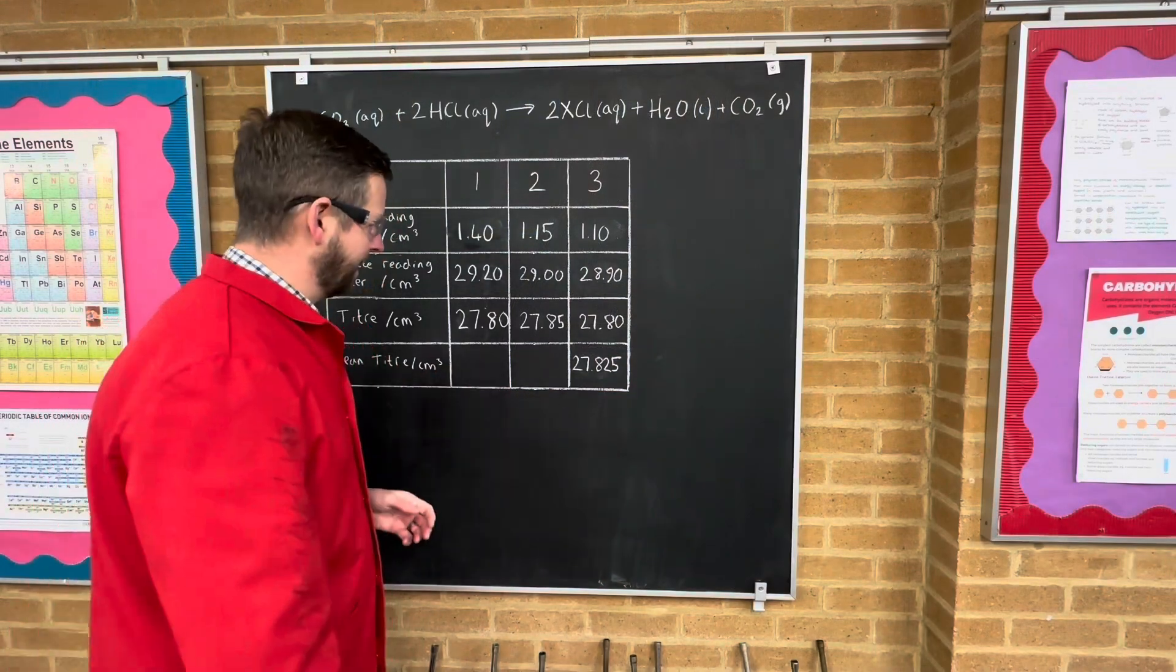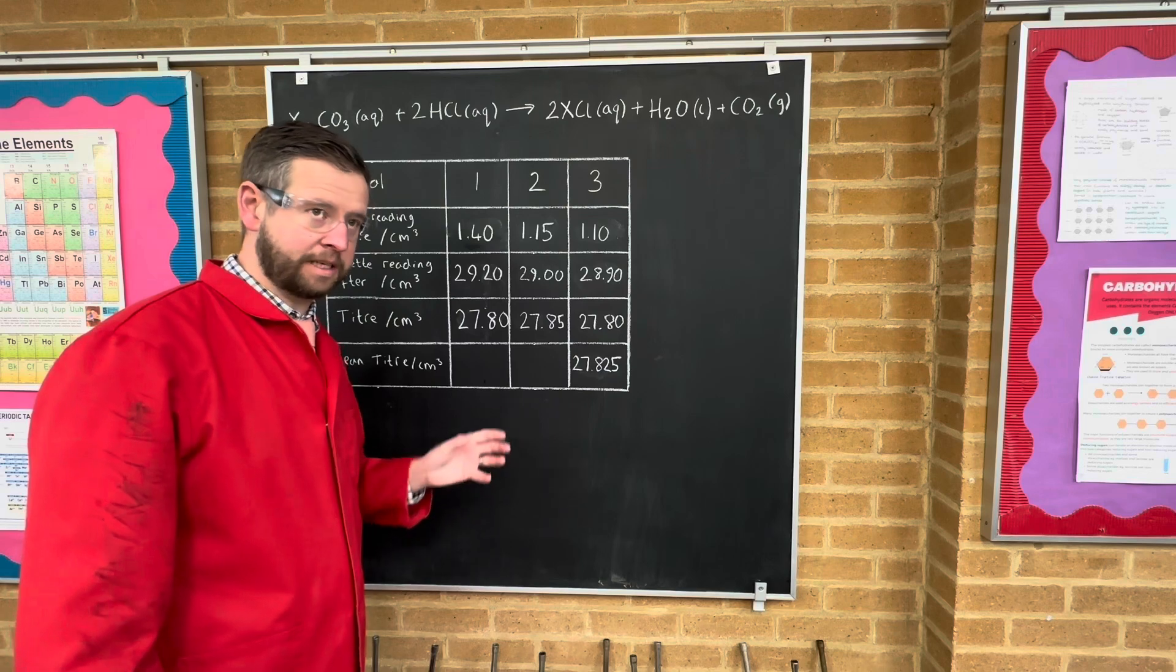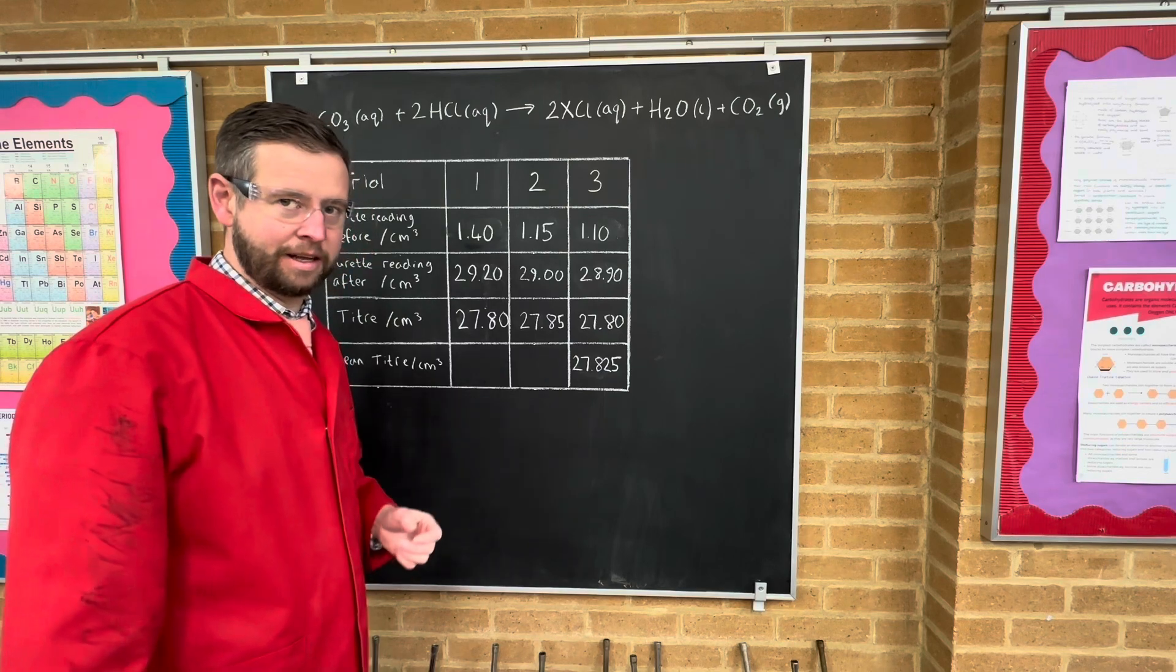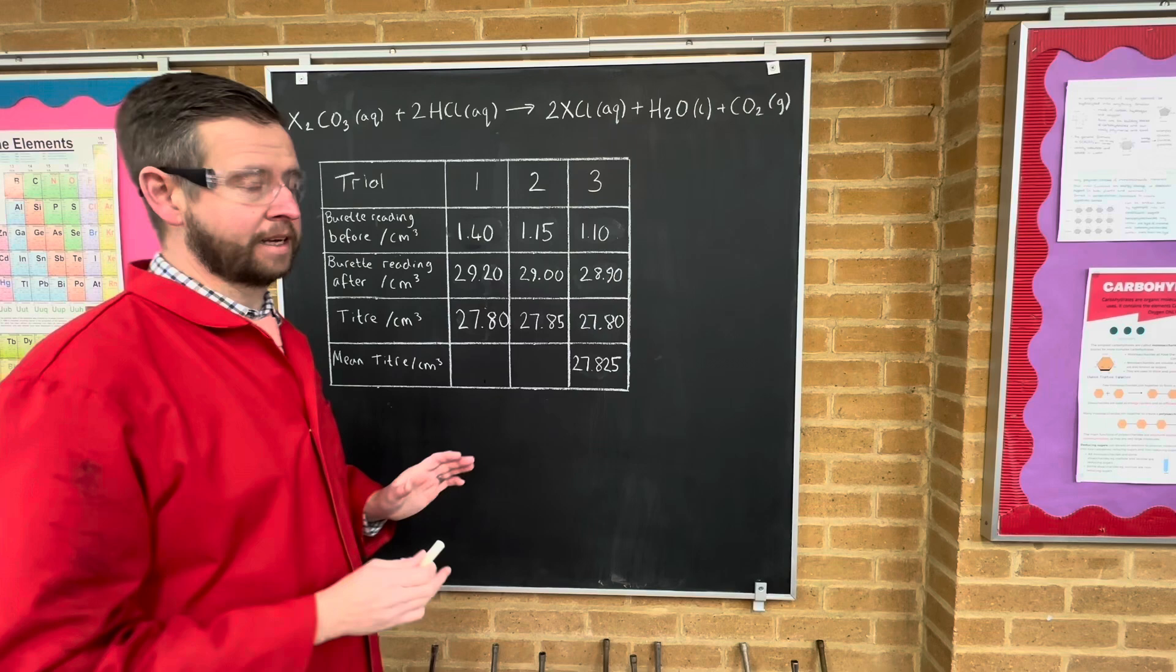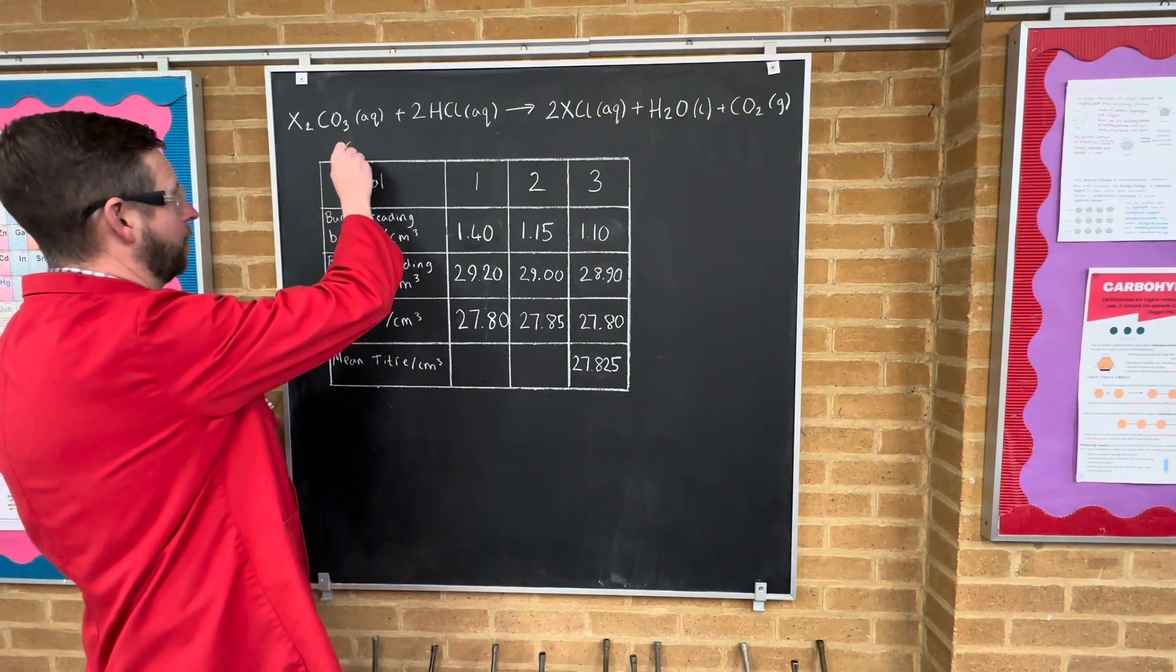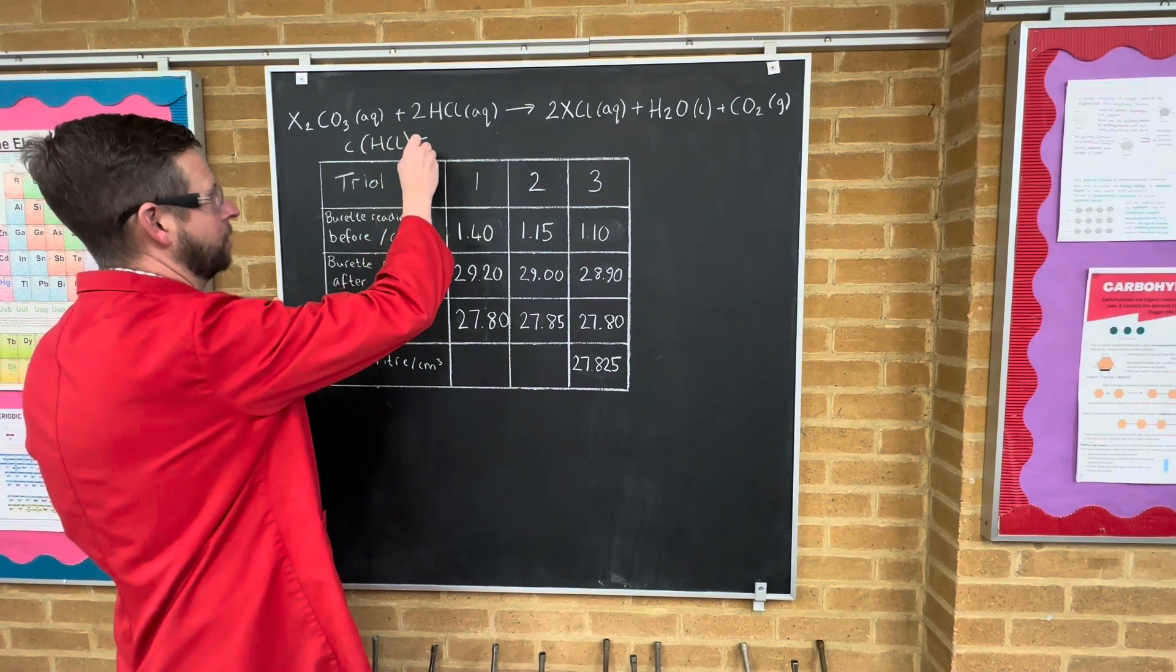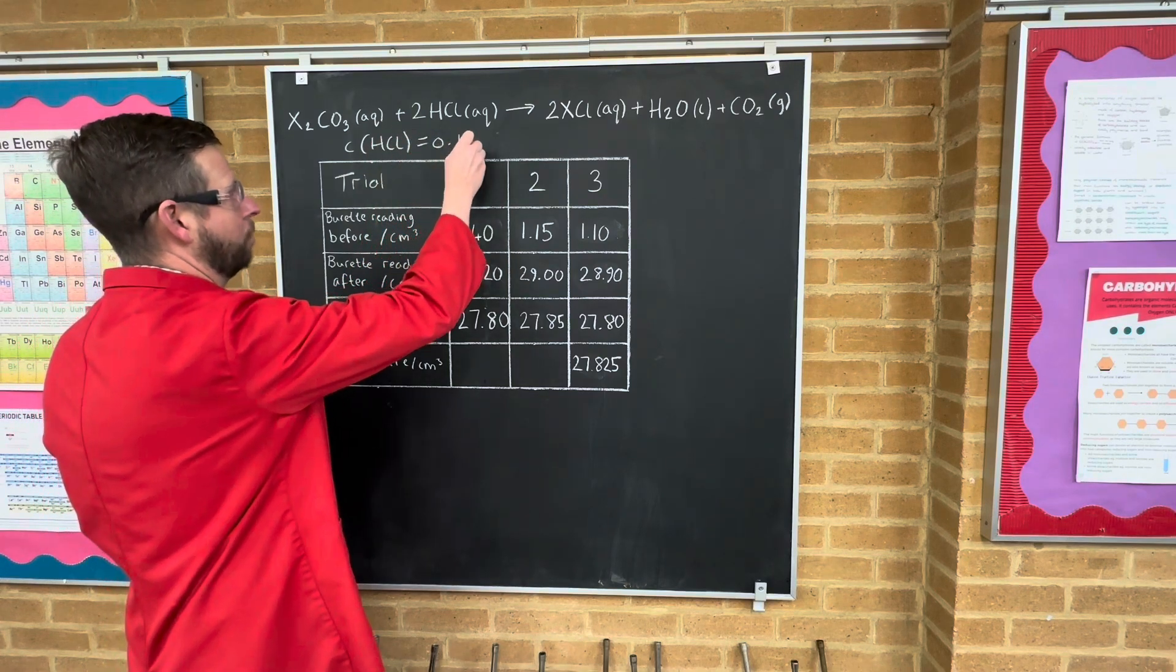So here is our data. You can see that we had quite good concordance, but is it going to actually produce the results? So let's work it through. The very first thing to note was that the concentration of the HCl, the hydrochloric acid, in this experiment was 0.1 molar.